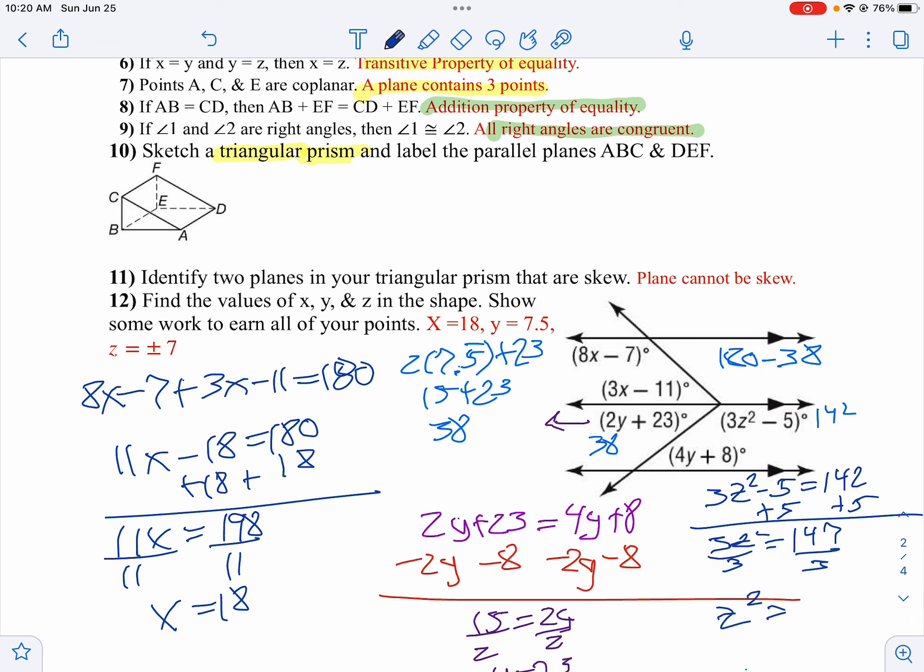z squared, well that'll be 49. Take the square root of both sides. Remember, you get two answers here. Plus or minus 7 is what we get for question number 12.